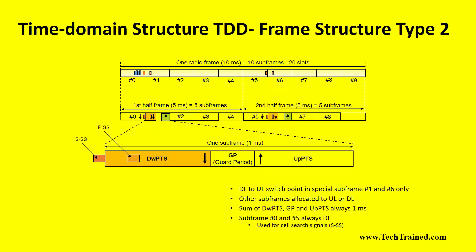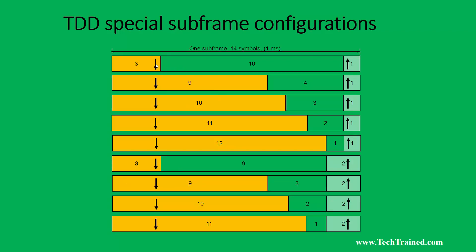To summarize, both FDD and TDD radio frames consist of 10 milliseconds in duration. However, the difference lies in how the subframes carry information — some carry downlink, some carry uplink — and this affects throughput calculations. In a special subframe using normal cyclic prefix, there are 14 OFDM symbols. How many of those OFDM symbols carry downlink versus uplink information can also be configured, giving the special subframe its own set of configurations.